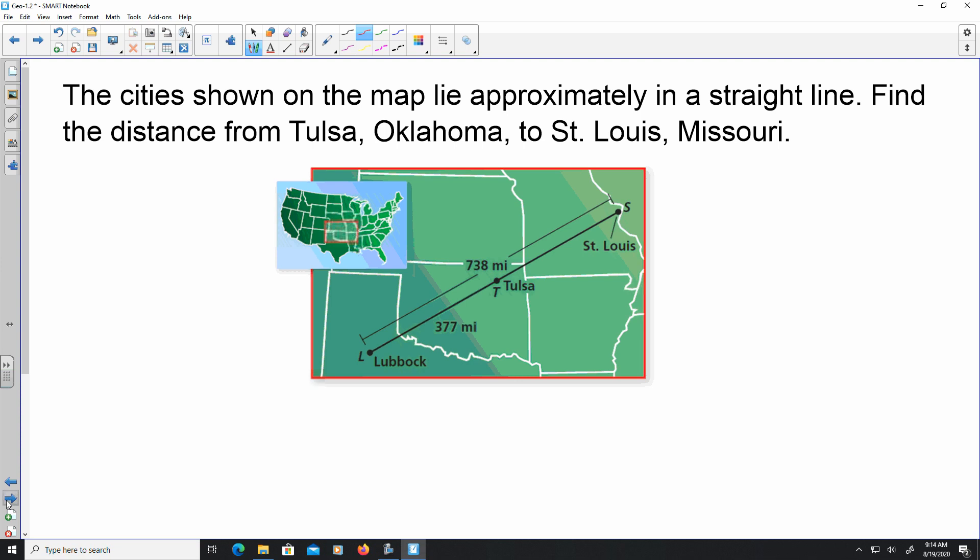Final example here, it says the cities shown on the map lie approximately in a straight line. Find the distance from Tulsa, Oklahoma to St. Louis, Missouri. So Tulsa is here, St. Louis is there. We don't know what that is, so they're going to call that X, same thing. But the distance between Tulsa and St. Louis are 738 miles away. So to figure this out, you can say that it's 377 plus X is going to be equal to 738. So 738 subtracted by 377, X is going to equal 361 miles.